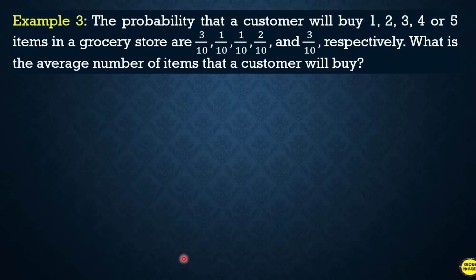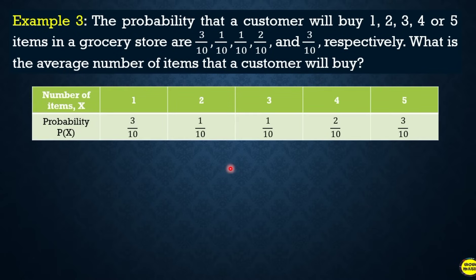Another example: the probability that a customer will buy 1, 2, 3, 4, or 5 items in a grocery store are 3/10, 1/10, 1/10, 2/10, and 3/10 respectively. What is the average number of items that a customer will buy? It's better to present this through a table. The number of items — 1, 2, 3, 4, 5 — with corresponding probabilities: 3/10, 1/10, 1/10, 2/10, and 3/10.